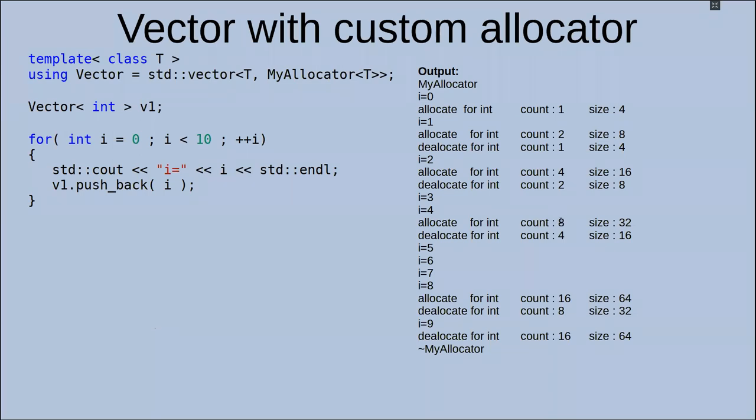Because vector allocates for eight elements, that's why we have enough memory and then we deallocate, called destructor for our allocator.